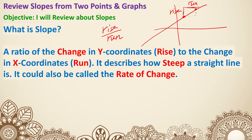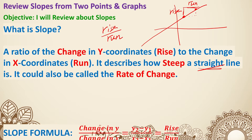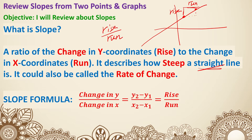Slope describes how steep a straight line is. We're just dealing with straight lines for now. It could also be called rate of change. So here's the slope formula. Whenever we talk about slopes, we need two points. So given that you have two points x1, y1 and x2, y2, they just represent two different points. The subscript is just saying these are from the first point and these are from the second point.